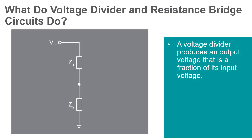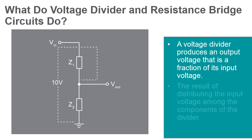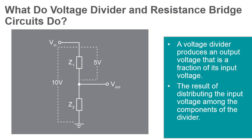A voltage divider is a passive linear circuit which produces an output voltage that is a fraction of its input voltage. Voltage division is the result of distributing the input voltage among the components of the divider. Using just two series resistors and an input voltage, we can create an output voltage that is a fraction of the input.